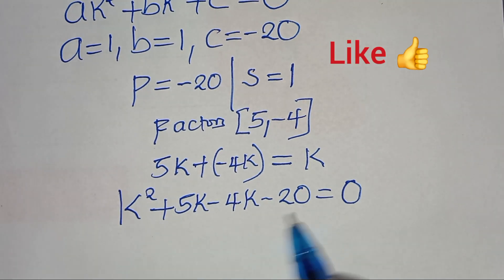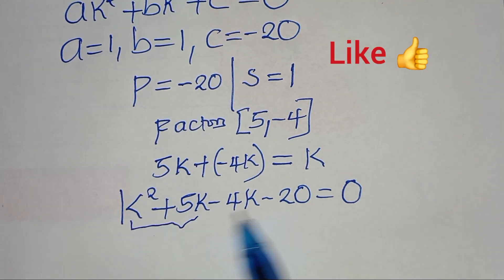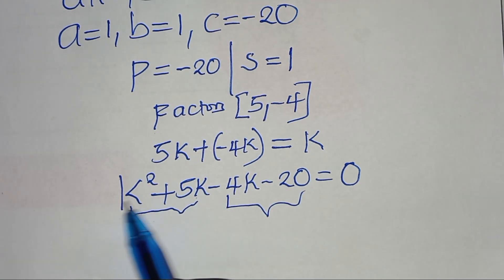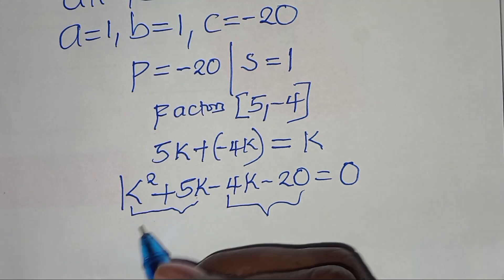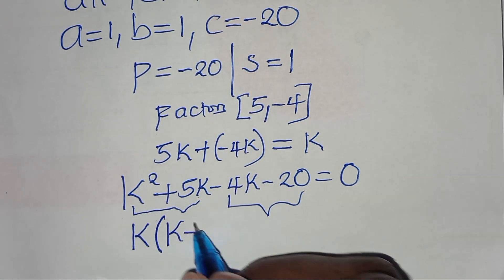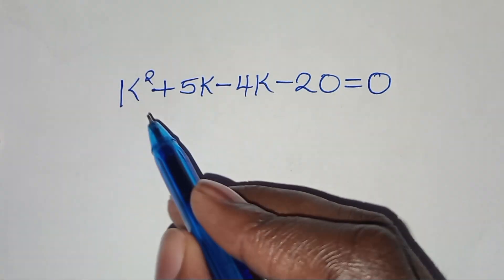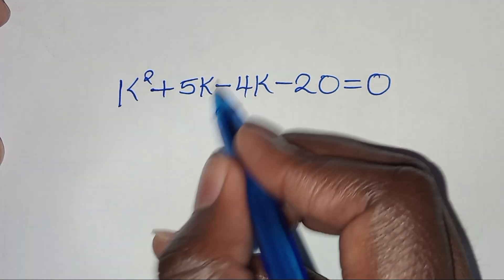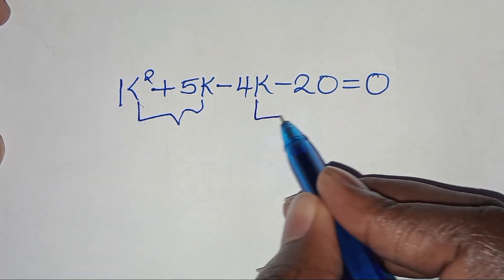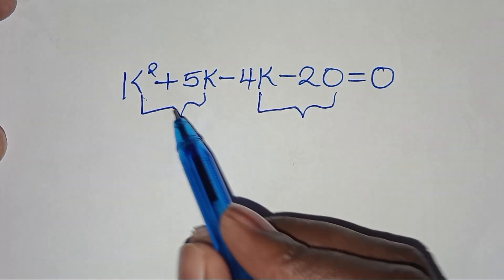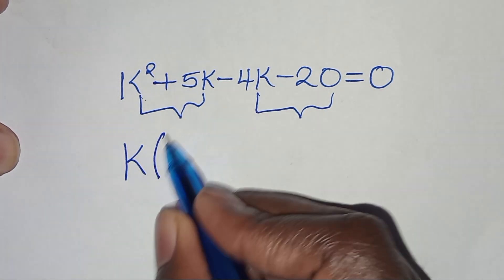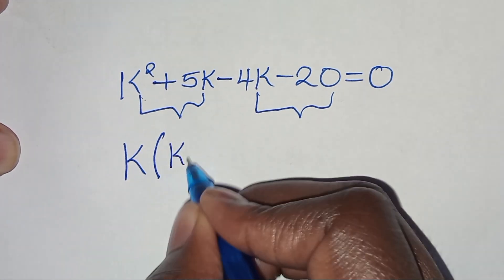We split into two parts: the first part is k squared plus 5k, and the second part is minus 4k minus 20. From the first part, k is common, so we factor out k to get k times (k plus 5). From the second part, 4 is common, so we factor out 4 to get minus 4 times (k plus 5).